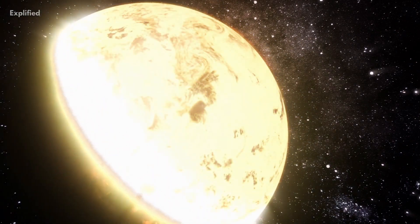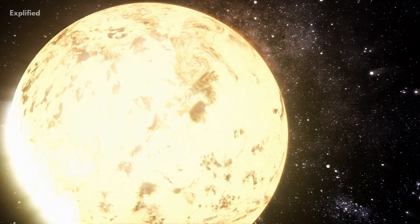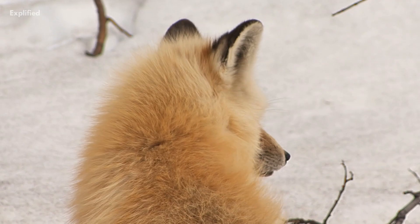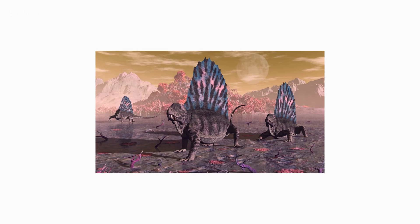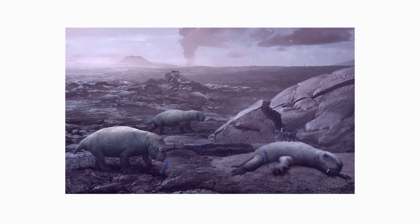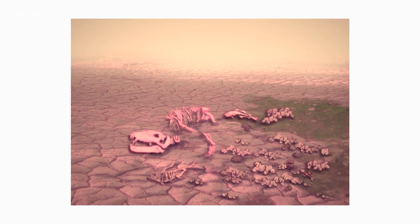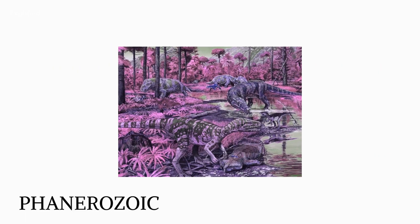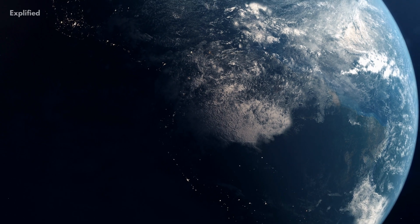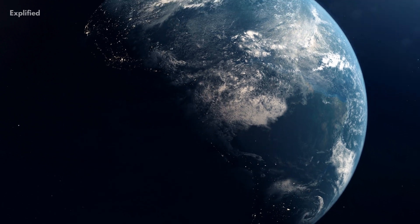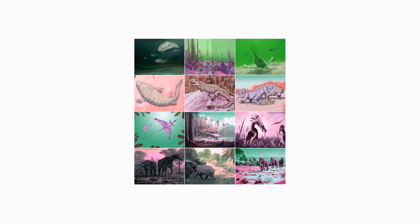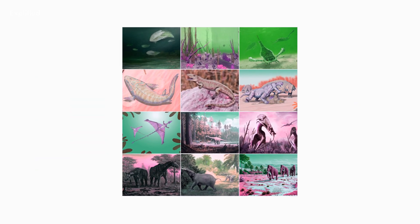After a cataclysmic extinction at the end of the Precambrian Eon, life on Earth erupted and evolved into complex forms of flora and animals, including mammals. During the Permian period, the world witnessed another catastrophic extinction, this time killing 90% of all life forms. Despite this, life has continued to exist until now. During the Phanerozoic, continents drifted around, merged, and eventually settled into their current places and shapes.